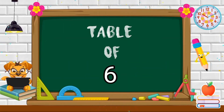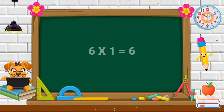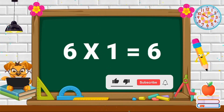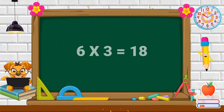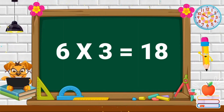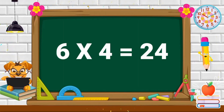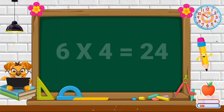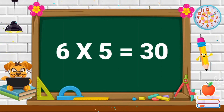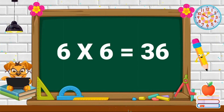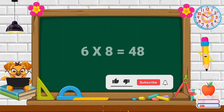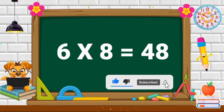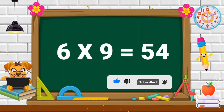Table of 6. 6 ones are 6. 6 twos are 12. 6 threes are 18. 6 fours are 24. 6 fives are 30. 6 sixes are 36. 6 sevens are 42. 6 eights are 48. 6 nines are 54.